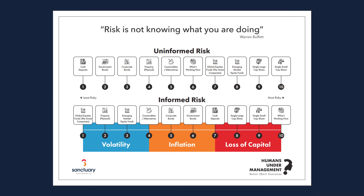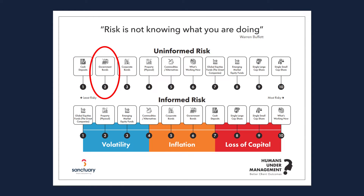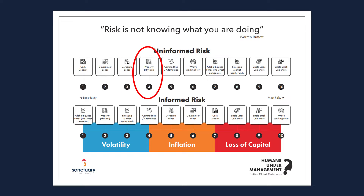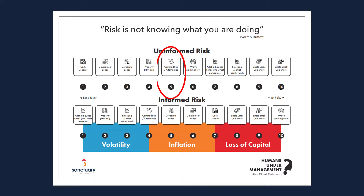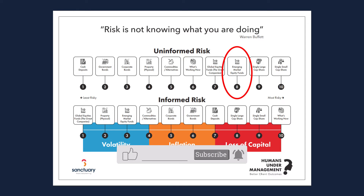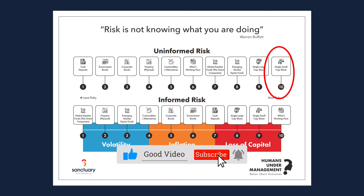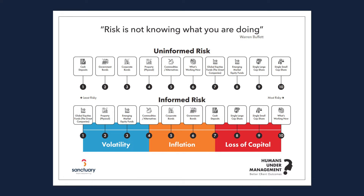So what we perceive is that cash is the least risky. Then government bonds, which are loans to the government; corporate bonds, which are loans to big corporate companies — and they'll pay a return on that. Physical property is a house, bricks and mortar, which you might own or might be rental properties. Commodities, alternatives — things like gas, oil, water, et cetera. What's new — this is your cryptos and NFTs you're hearing all about. And then the great companies of the world, emerging markets, and then small cap and large cap shares — that's actually owning individual shares in companies. So that's the higher end of risk, which I'd probably agree with anyway.